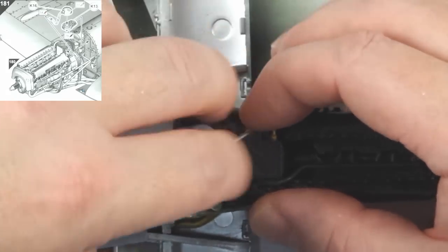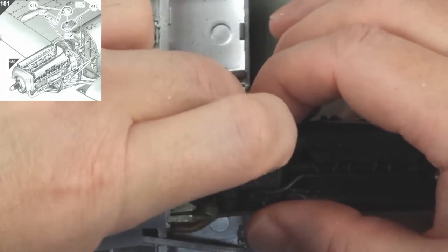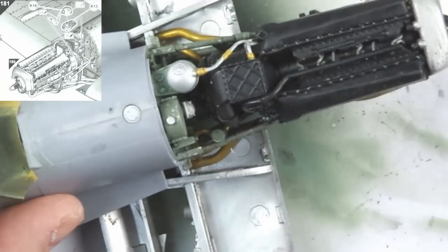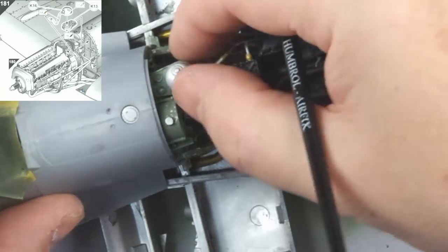191 has us fit the hydraulic filter, which is again, trickier than you'd imagine. I found attaching the pipe to the intercooler first and then the tank to the bulkhead was the easiest way of doing this.